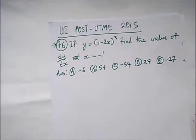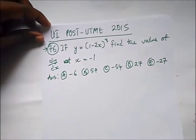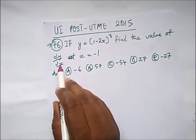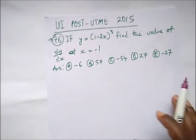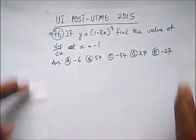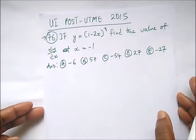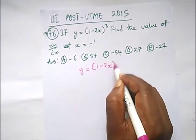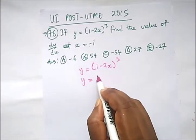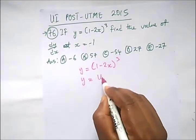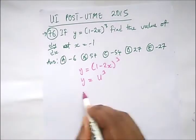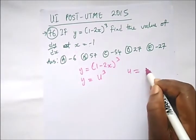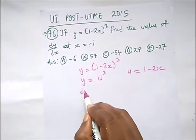Our next question is a differentiation question. It says: if Y = (1 − 2x)³, find the value of dy/dx at x = −1. I've treated differentiation — try to watch that video to revise. So here Y = (1 − 2x)³, which is a function of a function. We let U³ where U = 1 − 2x. So we look for dy/du.